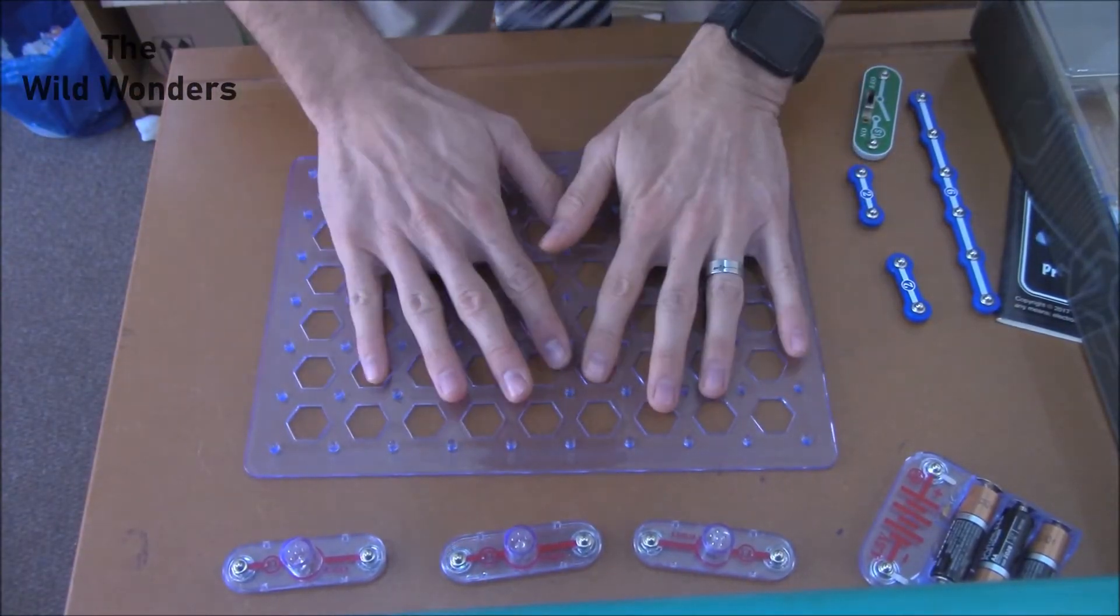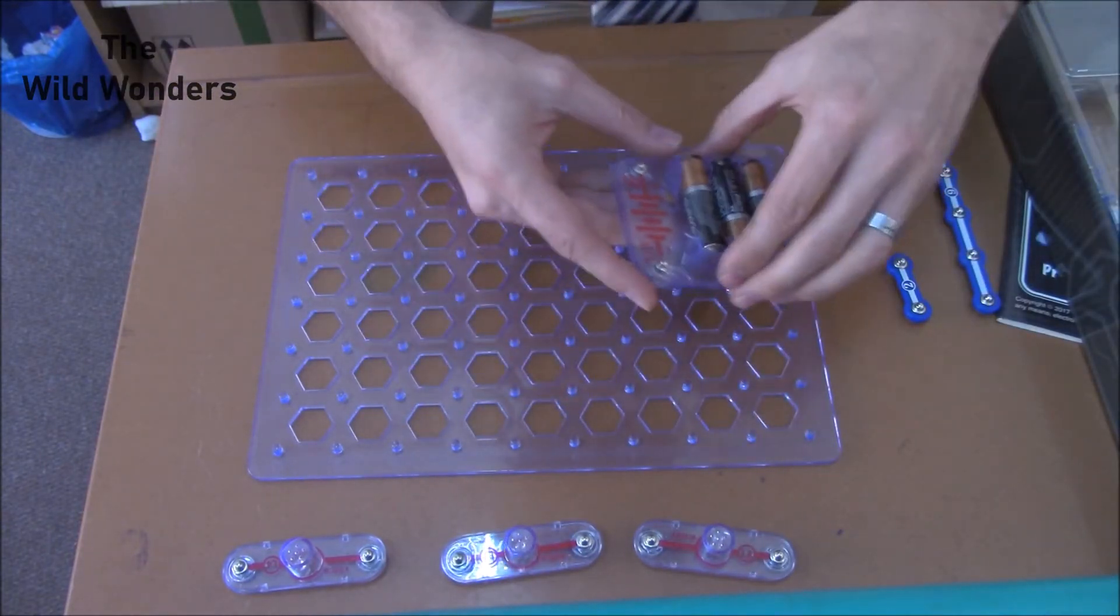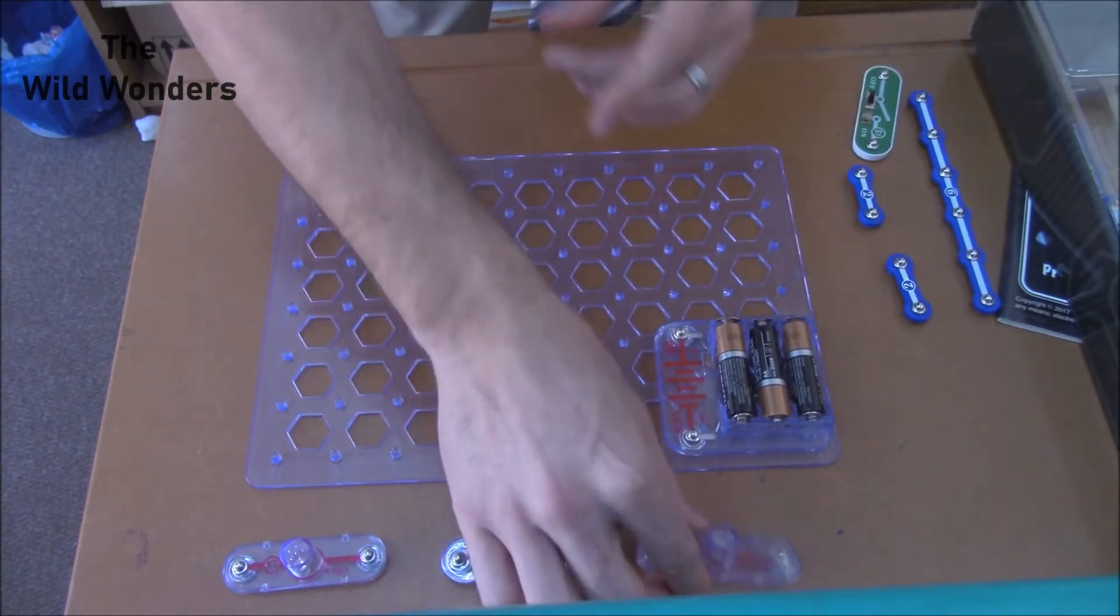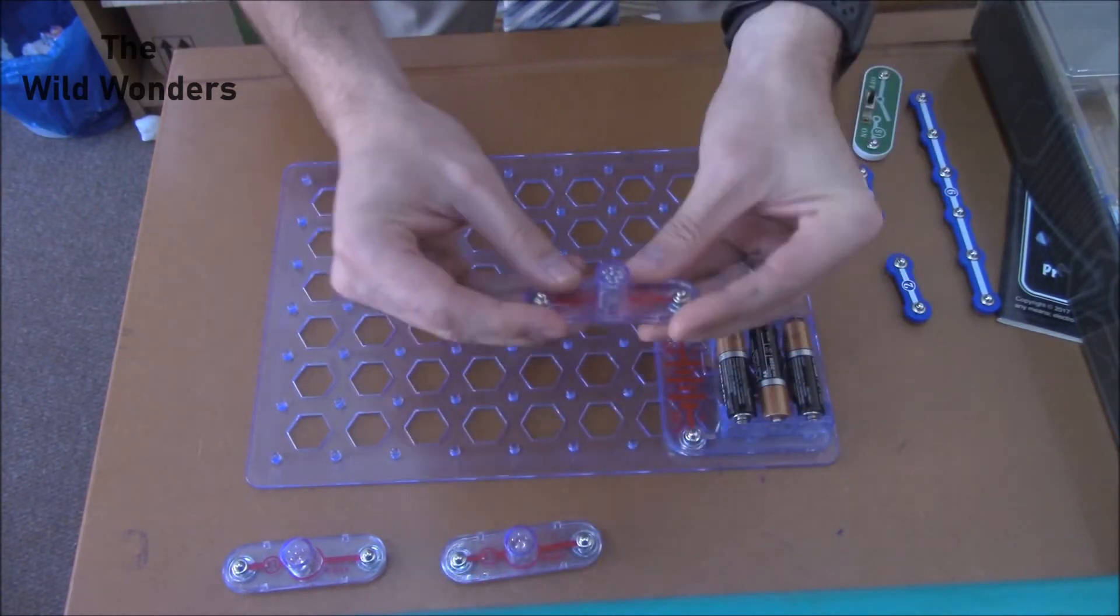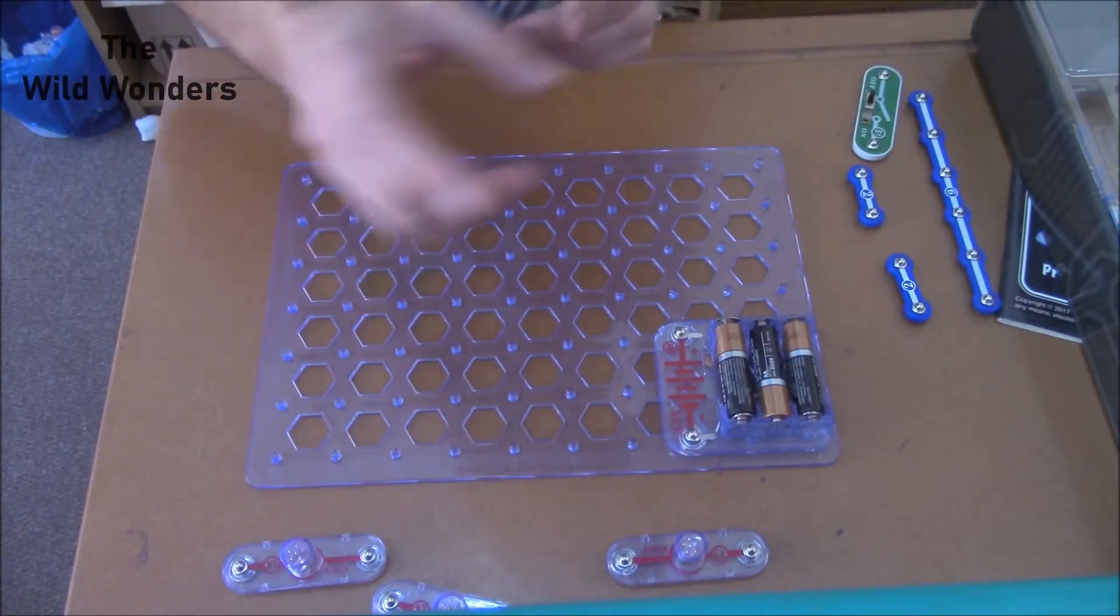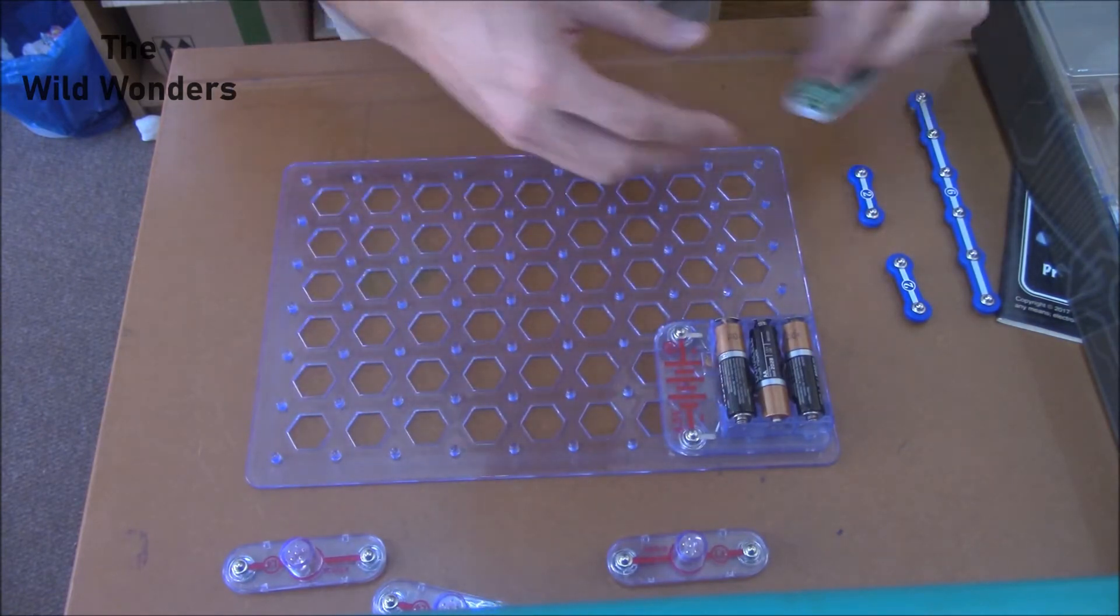Then we're going to take our cells or our batteries and place them on the circuit board. Then we want to connect our light bulbs. Now I have three light bulbs here. First of all, before we connect our light bulbs, we want to have a switch.